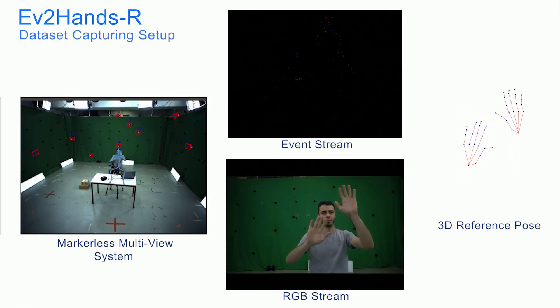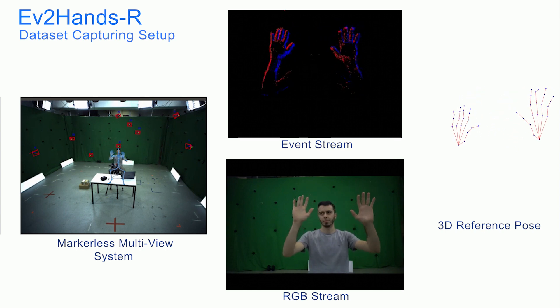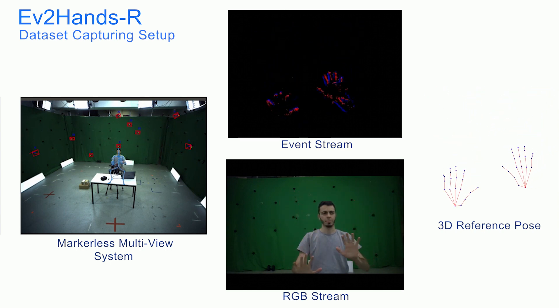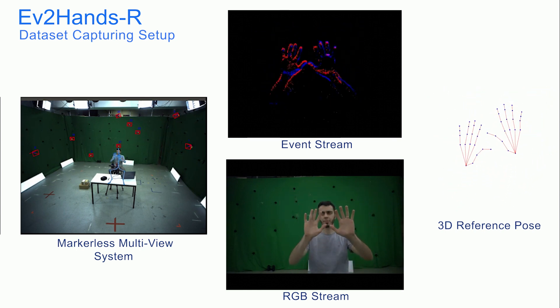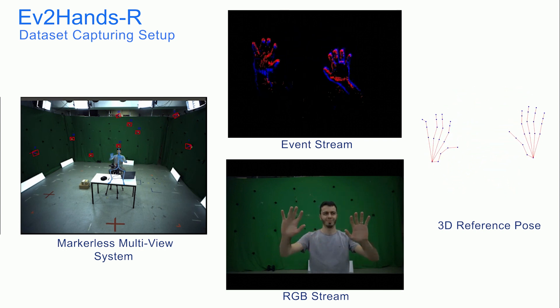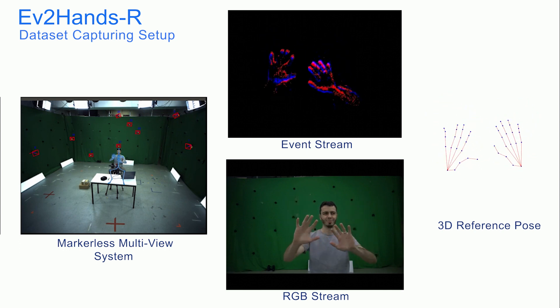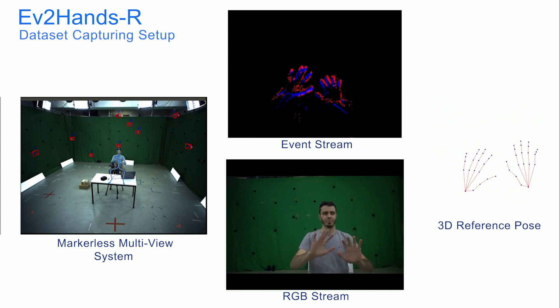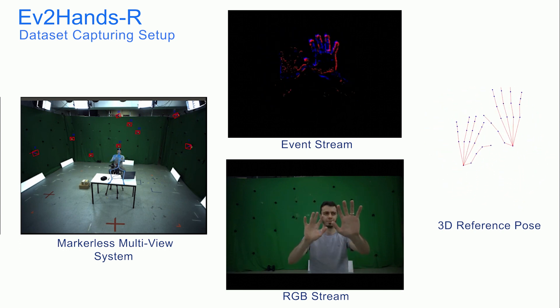We use a markerless multi-view motion capture system to obtain the global 3D pose of an actor. We record the event stream along with the synchronized RGB stream using an event camera Davis 346 and an RGB camera placed in front of the actor. The hand poses are then projected to the camera views of the event stream and RGB image stream.